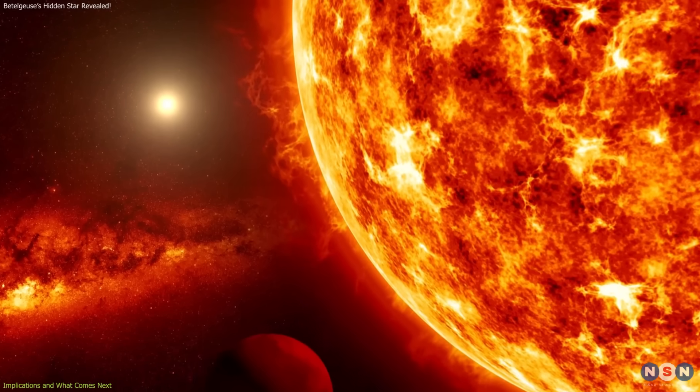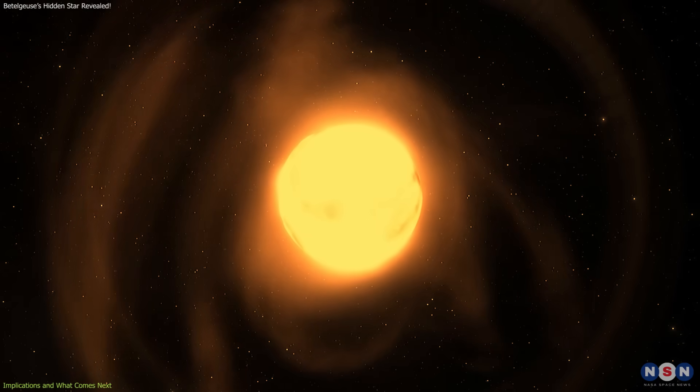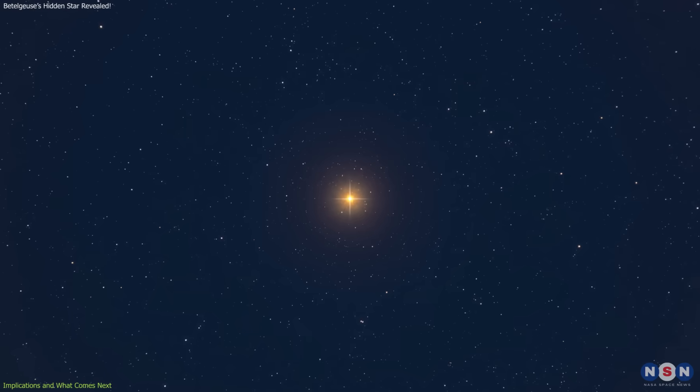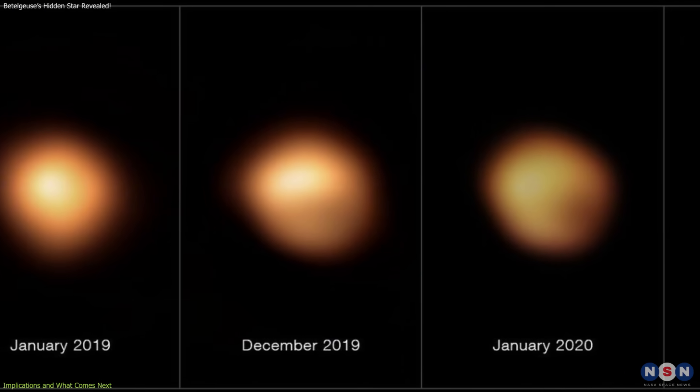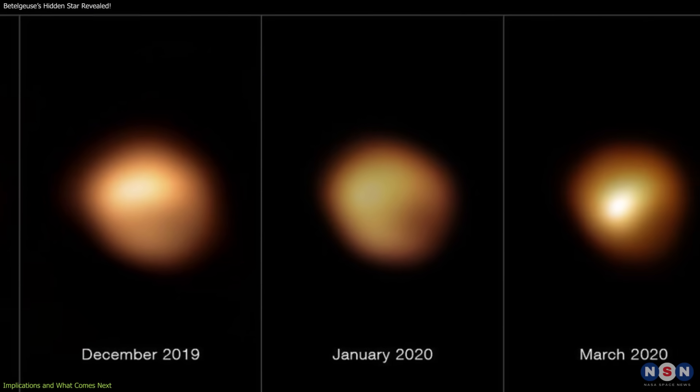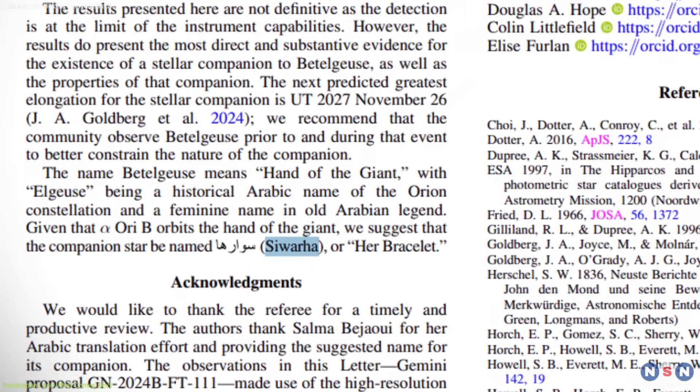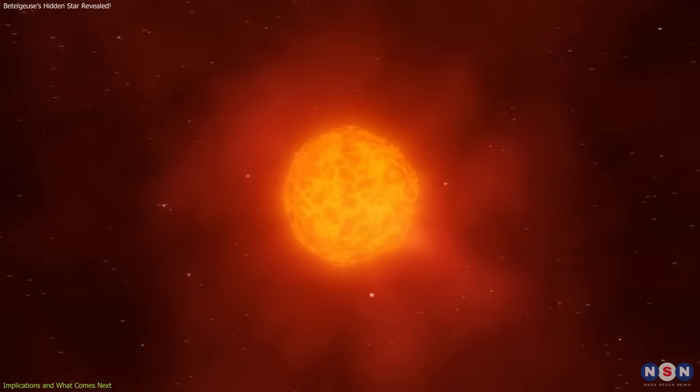Culturally, the finding deepens Betelgeuse's story. For centuries, it has captured human imagination as a bright, unpredictable star. Its dramatic dimming in 2019 reminded the world that the heavens are dynamic. The proposed name Siwarha adds another layer, linking a modern scientific achievement with the linguistic heritage of the star's name.